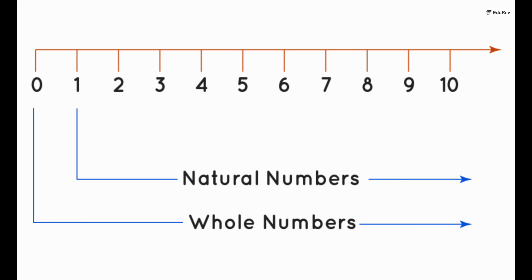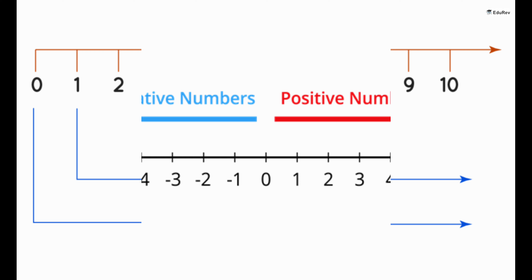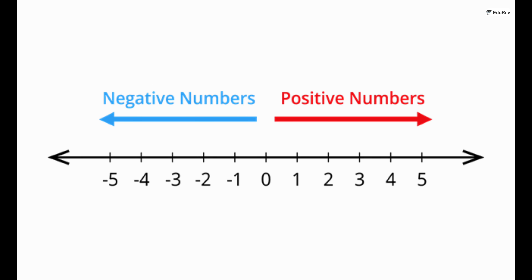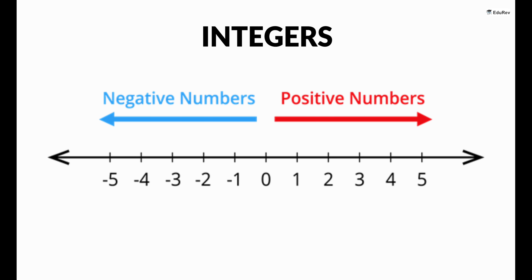Now, if you change the starting point to 0 and keep counting by adding 1 to the previous, then we get the set of the whole numbers, which are represented by capital letter W. Now, just take all the whole numbers and their negatives — then this new set is called the set of integers. Integers are denoted by capital letter Z.